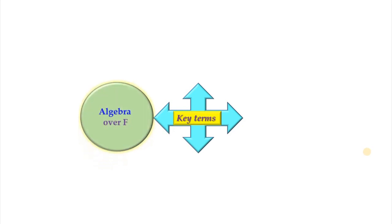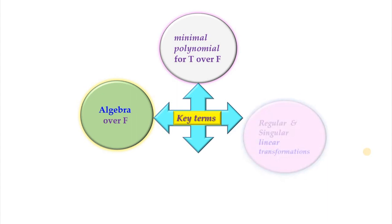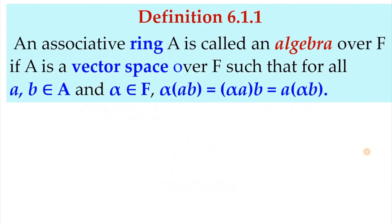These are the key terms in this section. First we have algebra over F, which is an algebraic structure. We will define it first and then prove that Hom(V,V) is an algebra over F, denoted as A(V). We will also cover the minimal polynomial for any linear transformation T over F, the definition of regular and singular linear transformations, and the rank of a linear transformation.